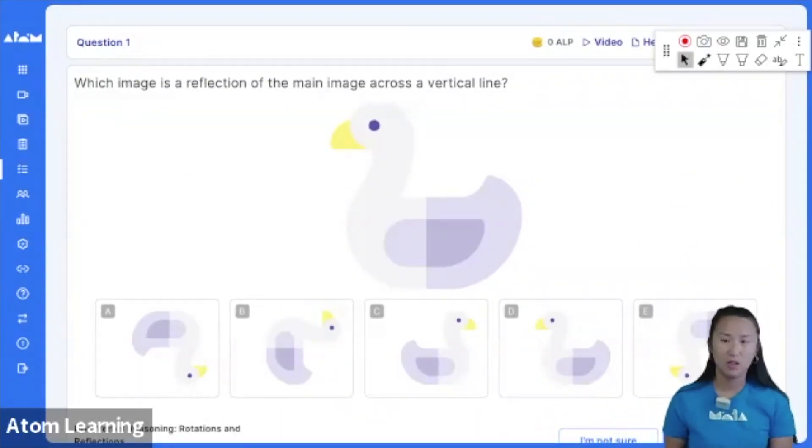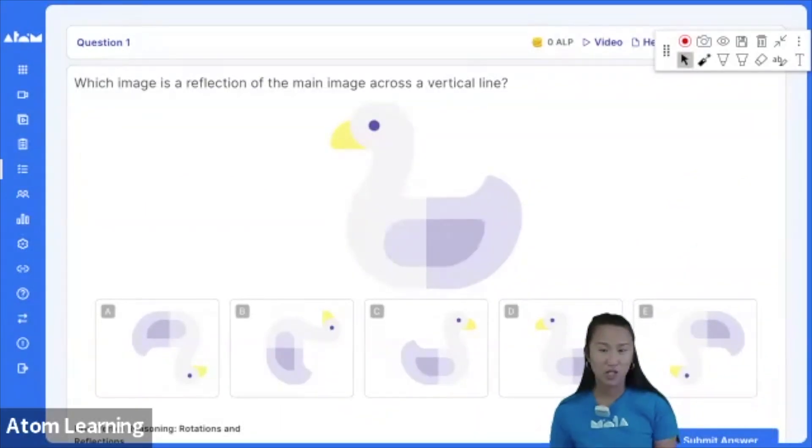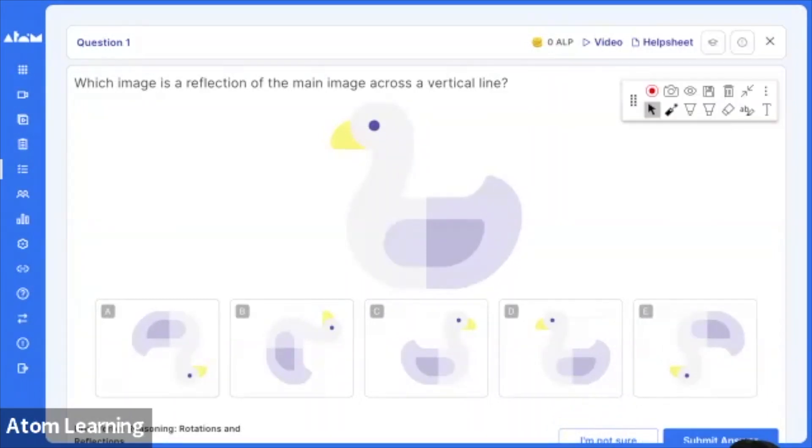For our very first question in Nucleus, choose the image which is a reflection of the main image across a vertical line. If you're unsure about what a vertical line is, I'll give you a little hint. So it could be like that, or it could be on the other side.